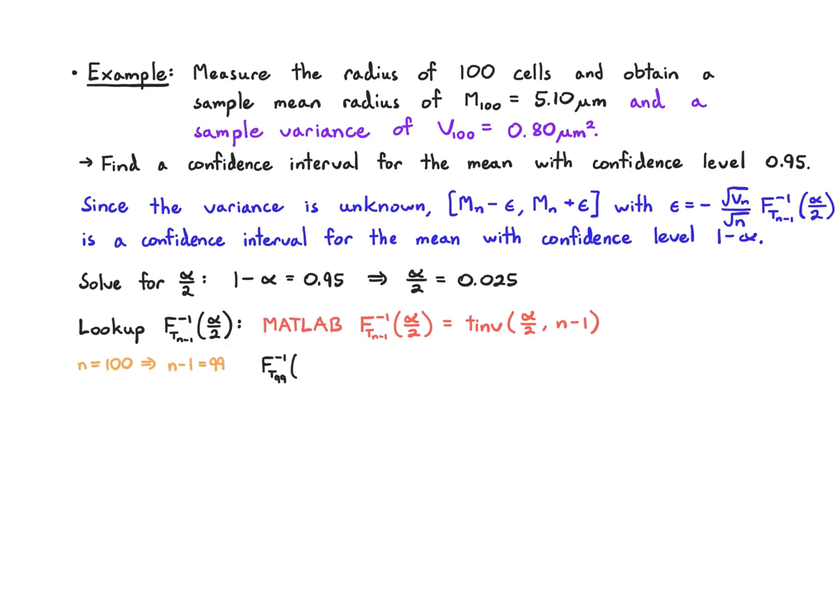So when we plug into that, we get this inverse CDF of 0.025. We plug in t inverse of 0.025, 99 and we'll get minus 1.98. So now we're solving for epsilon. Epsilon actually is going to multiply by minus here, then take the square root of the sample variance divided by root n times this value that we got above. We get 0.18 microns.